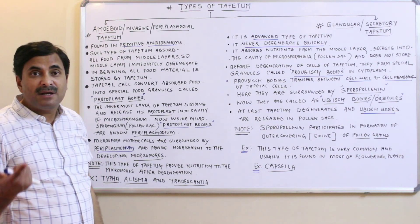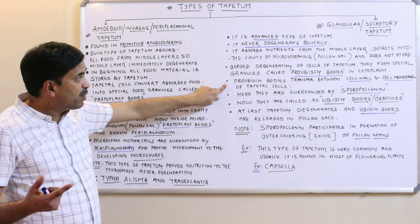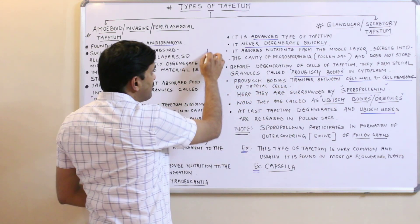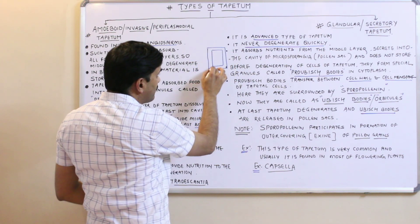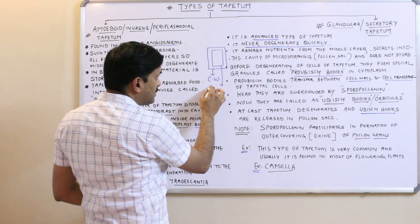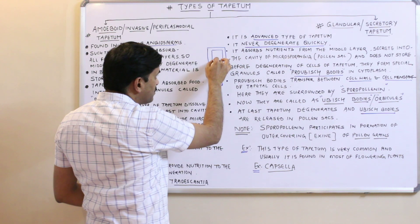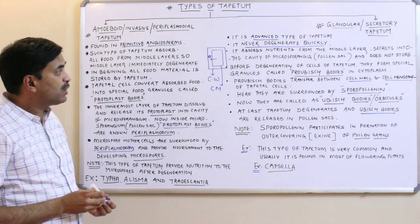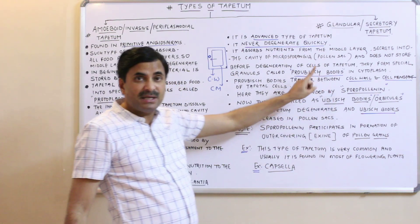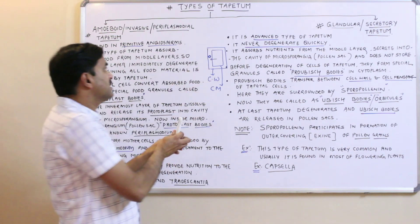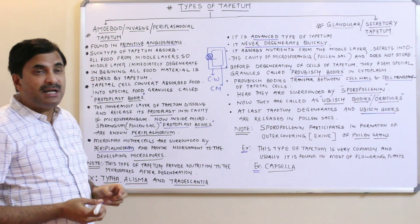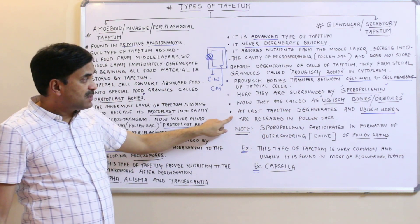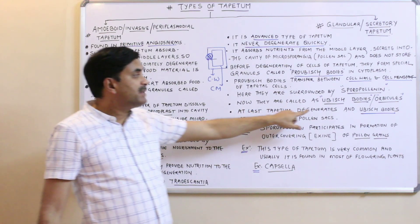These pro-Ubisch bodies are transferred between the cell wall and the cell membrane of the tapetum cells. For example, if this is a tapetum cell with a cell wall and a cell membrane, the pro-Ubisch bodies are released in that space. There they get surrounded by sporopollenin, and once surrounded by sporopollenin their name changes — they are now called Ubisch bodies or orbicules.